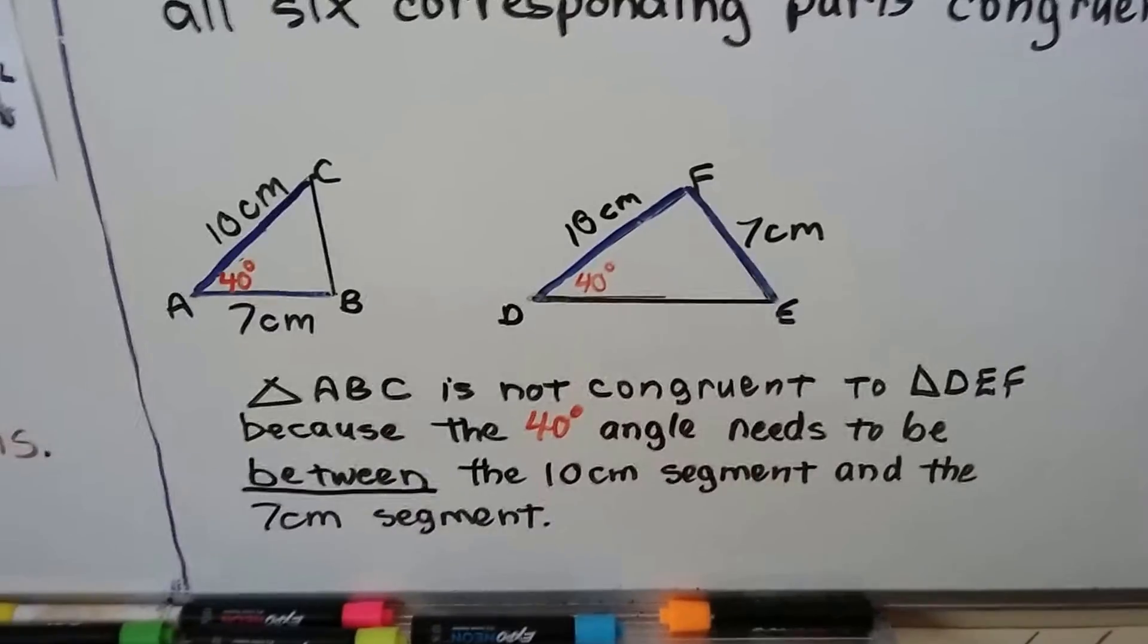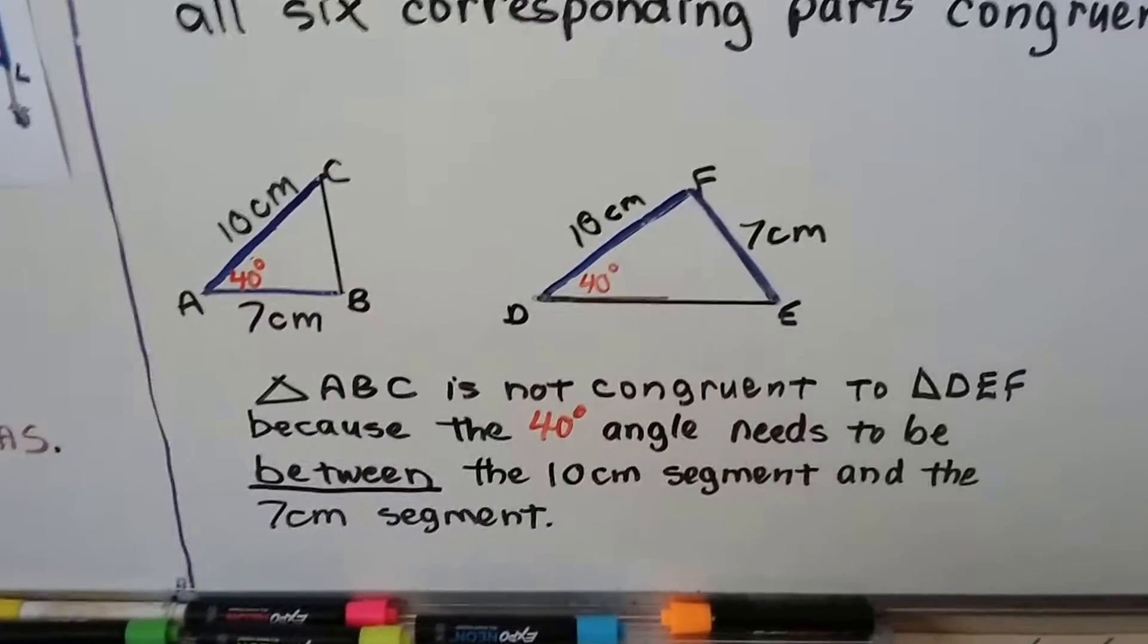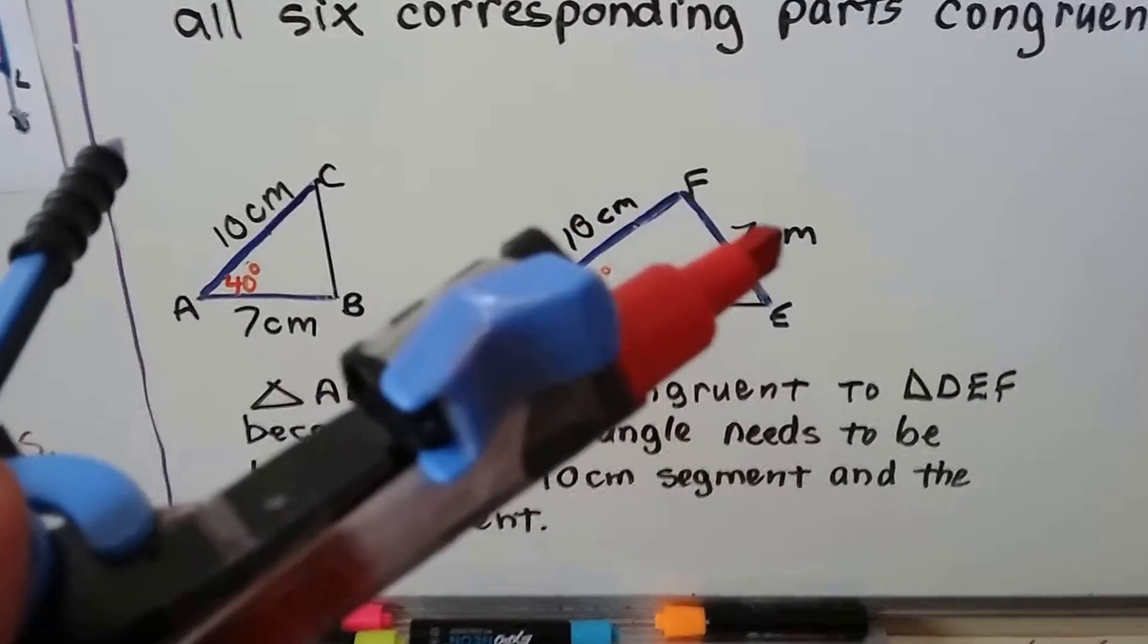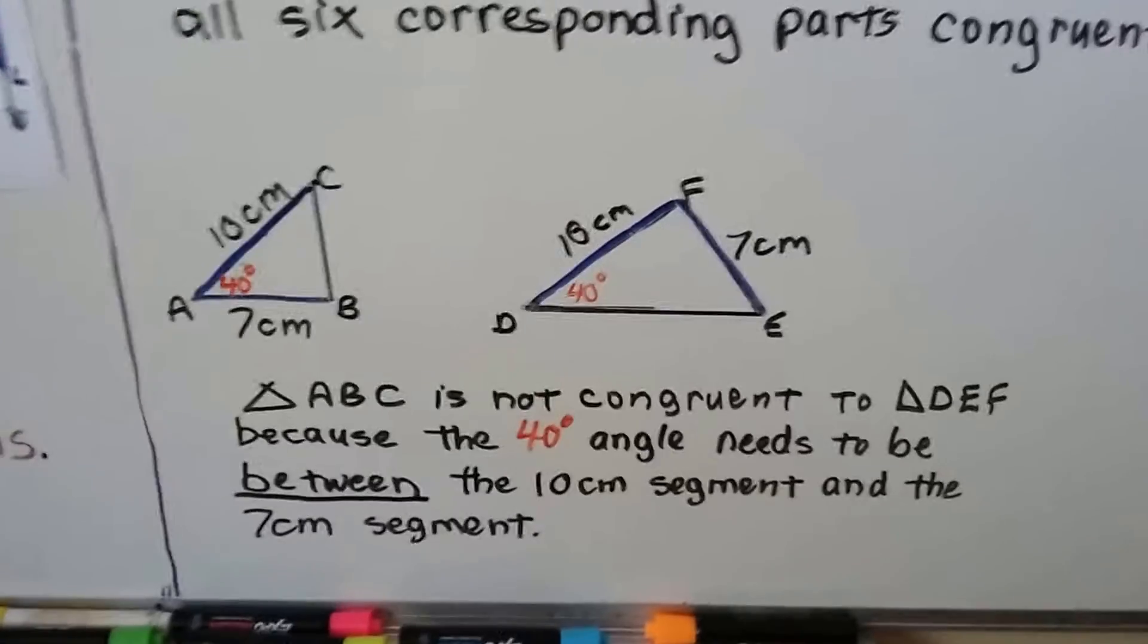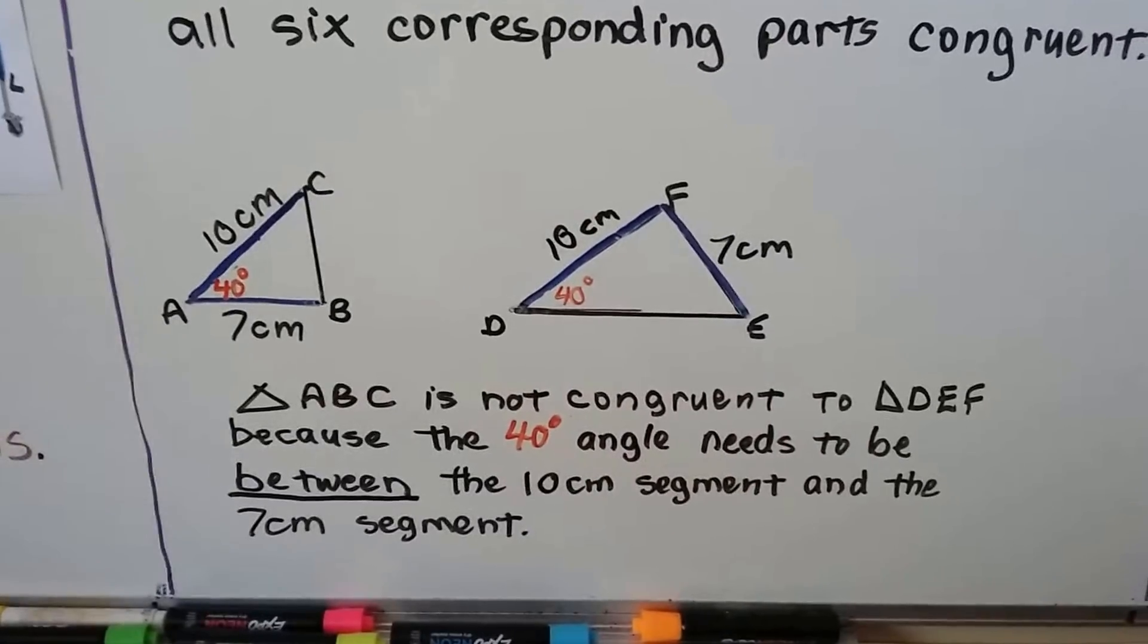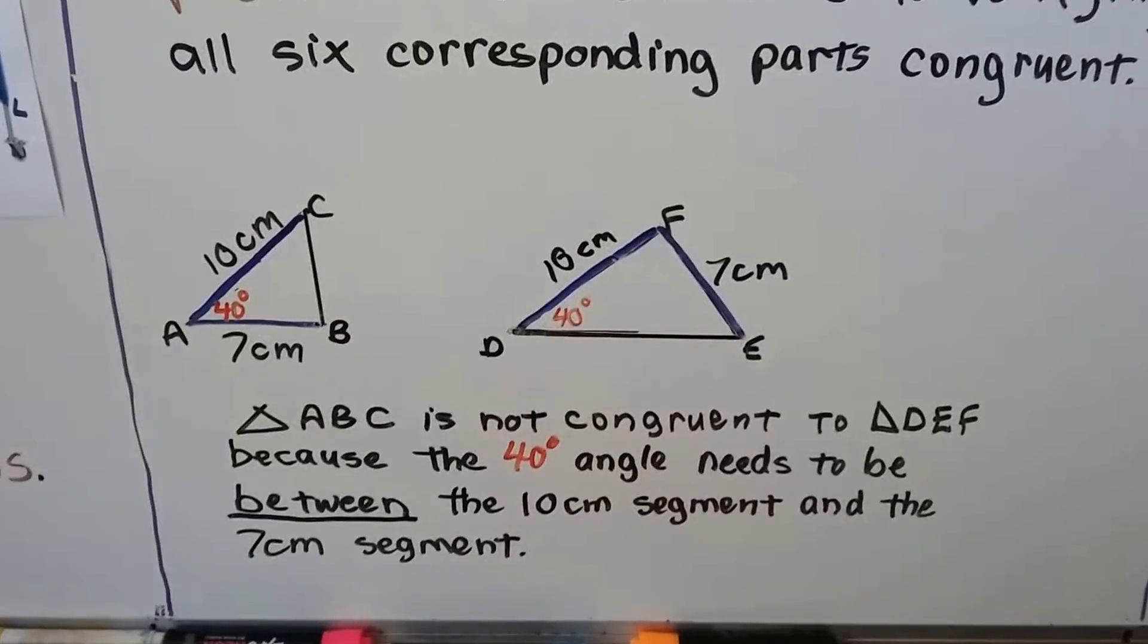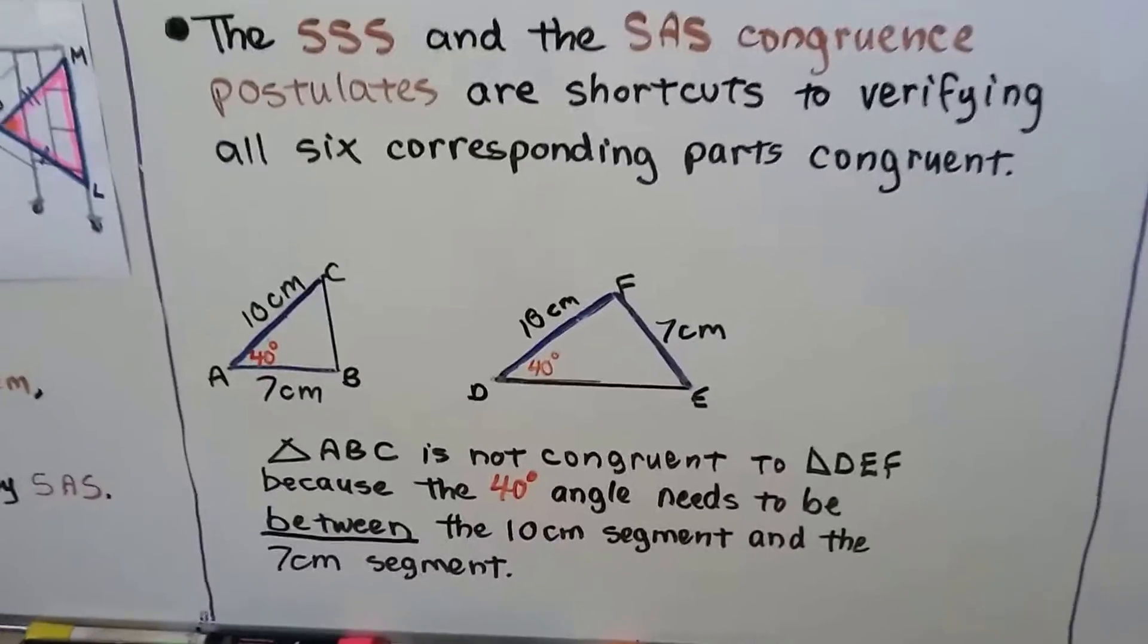Take a look at these two triangles. In this first one, we've got a 10 centimeter segment, a 40 degree angle, and a 7 centimeter segment. In this one, we've got a 10 centimeter segment, a 7 centimeter segment, and a 40 degree angle. But triangle ABC is not congruent to triangle DEF because the 40 degree angle needs to be between the 10 centimeter segment and the 7 centimeter segment. The order is very important.